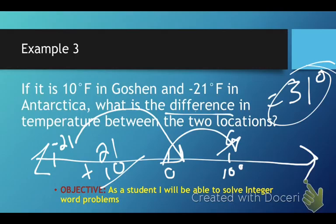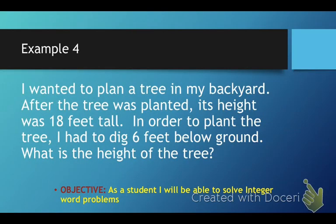Example number 4. I wanted to plant a tree in my backyard. After the tree was planted, its height was 18 feet tall. In order to plant the tree, I had to dig 6 feet below the ground. What is the height of the tree?